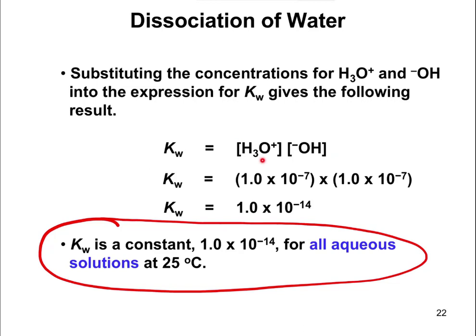Kw still holds and means that if we know the H₃O⁺ concentration, we can figure out the OH⁻ concentration, and vice versa. If you were to add a little bit of H₃O⁺ — essentially adding something acidic — you increase the amount of H₃O⁺, but in doing so you decrease the amount of OH⁻. They're like a seesaw: one goes up, the other goes down.